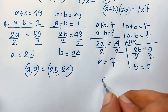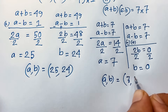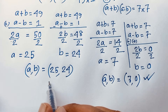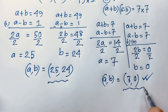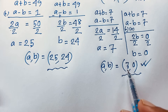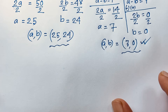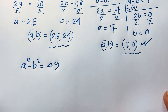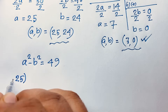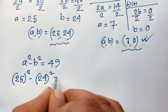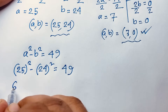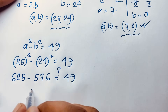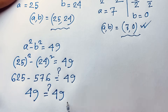So from the second case, (a, b) = (7, 0). Since 0 is an integer, this is valid. Let's verify: for a = 25, b = 24 — we check 25² - 24² = 625 - 576 = 49. This equals 49, so both sides are equal.